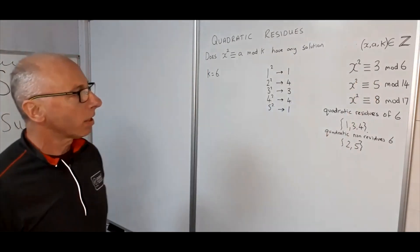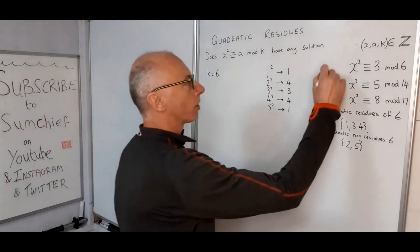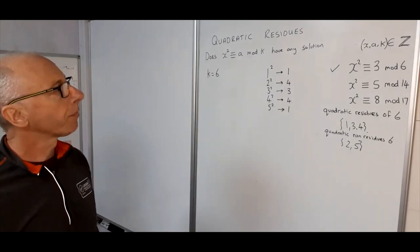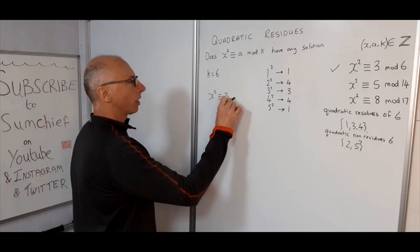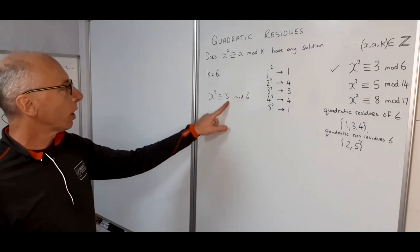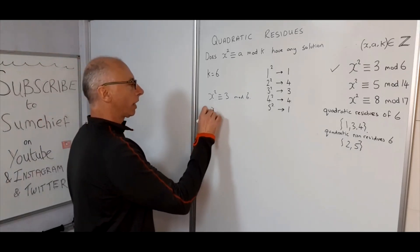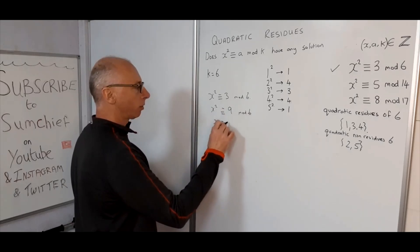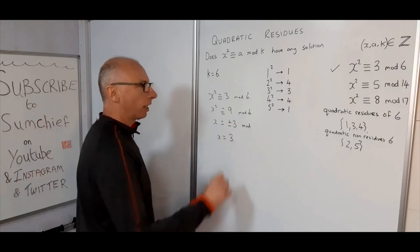x² ≡ 3 (mod 6). Since 3 is a quadratic residue of 6, this has a solution. Working mod 6, we can increase by 6 until we get a perfect square. So x² ≡ 9 (mod 6), which means x = ±3 (mod 6), therefore x = 3.